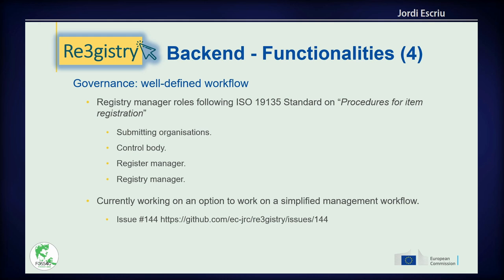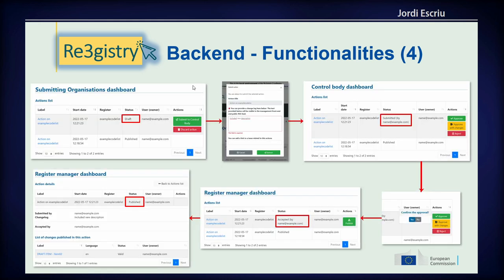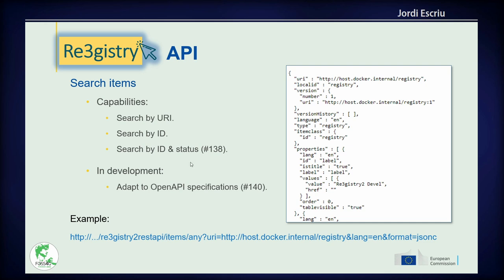These are the workflow dashboards with their different roles. You can see the dashboard for the submitting organization, where you submit the item you want to add to the registry. Then the control body has to make a decision on what to do with that specific item. Once it is approved, it is the register manager who has to publish it. That covers the main functionalities of the admin site — the back end. All of this information is available through an API, where you can search by URI, by ID, or by ID and status.